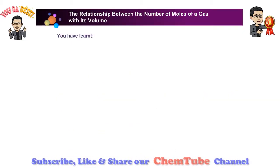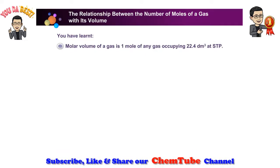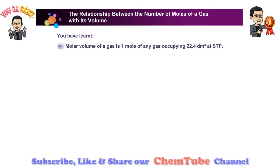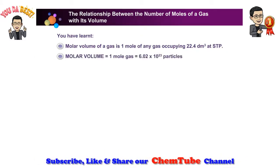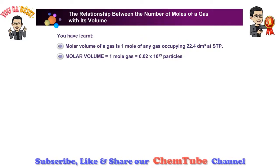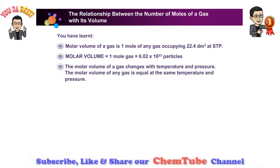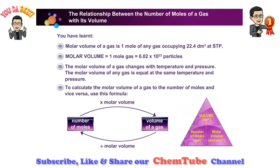In this lesson, you have learnt about the relationship between the number of moles of a gas with its volume. The molar volume of a gas is 1 mole of any gas occupying 22.4 cubic decimetres at STP. One mole of gas consists of 6.02 times 10 to the power of 23 particles, so 1 molar volume of gas contains 6.02 times 10 to the power of 23 particles. The molar volume of any gas is the same at similar temperature and pressure. The number of moles of any gas multiplied by the molar volume equals the volume of the gas, and the volume of any gas divided by the molar volume equals the number of moles of the gas.